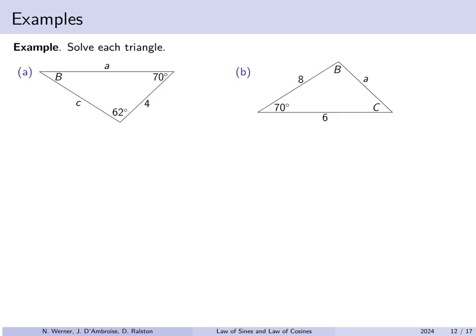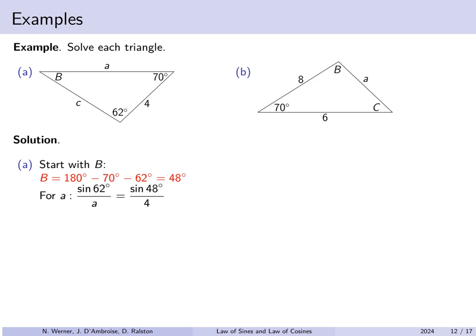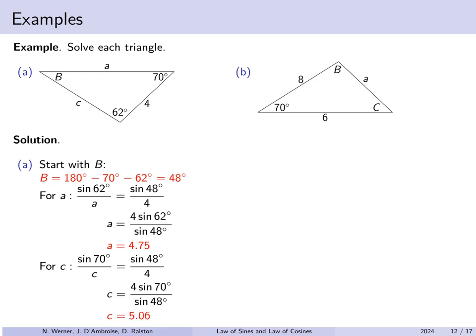Let's solve both of these triangles. For triangle A, we have two angles and the side between them. Since two angles are given, we can solve for angle B quickly. Now that we have all three angles and need one missing side, we use the law of sines. The sine of 62 degrees divided by unknown length a must equal the sine of 48 degrees divided by 4. Solving gives a approximately 4.75. Similarly, the sine of 70 degrees divided by unknown c equals the sine of 48 degrees divided by 4, giving c approximately 5.06. Triangle A is fully solved.